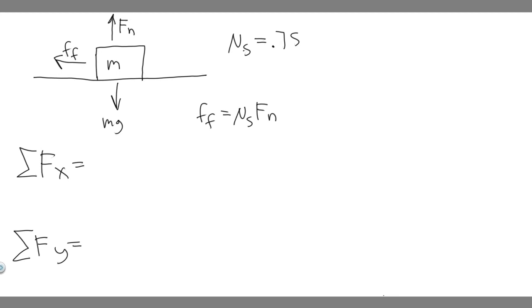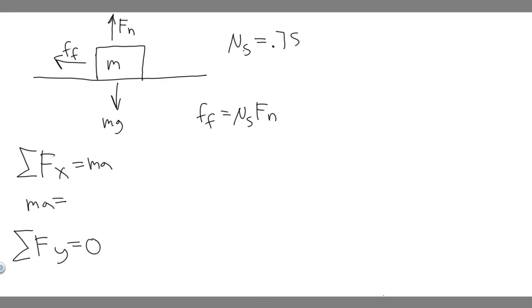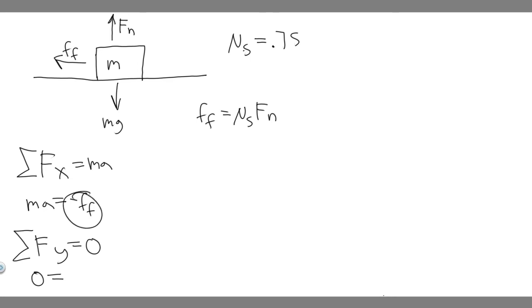In the x direction, f equals ma, so the sum equals ma because we're moving along this direction. In the y direction, the sum equals zero because acceleration is zero — we're not moving in the y direction. Now for the forces in the x direction, we only have one force, which is the force of friction. Since it's going to the left, we label it negative: minus f sub f. We want to solve for the positive force of friction, so we multiply through by negative one, giving us f sub f equals minus ma.